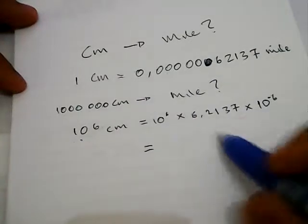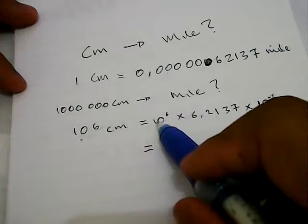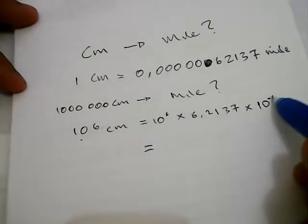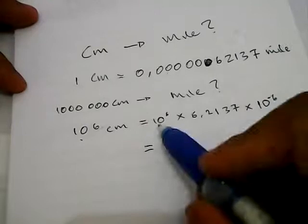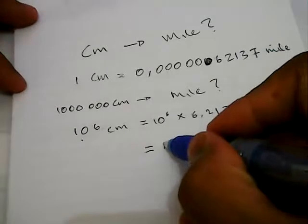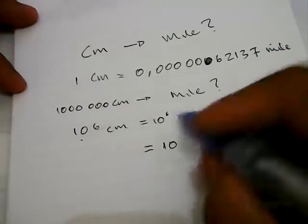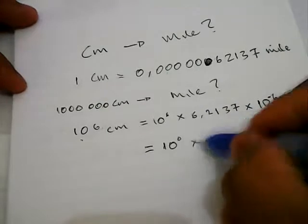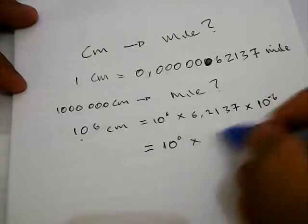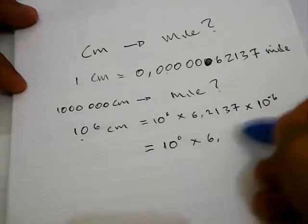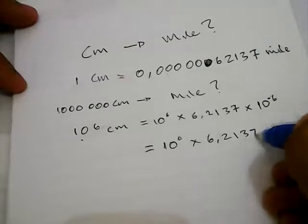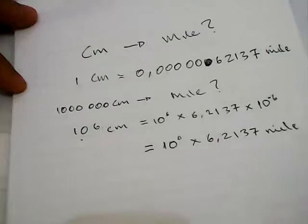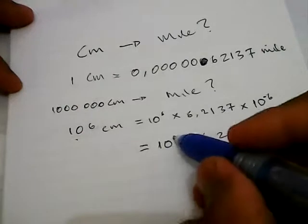So 10 to the power of 6 multiplied with 10 to the power of minus 6 is actually 10 to the power of 0, multiplied with 6.2137 miles.